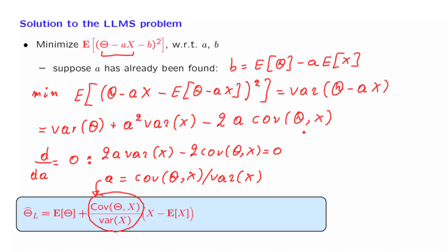It's also instructive to rewrite this solution in a slightly different form, involving the correlation coefficient. Recall that the correlation coefficient between two random variables is defined as the covariance between the two random variables divided by the product of their standard deviations.